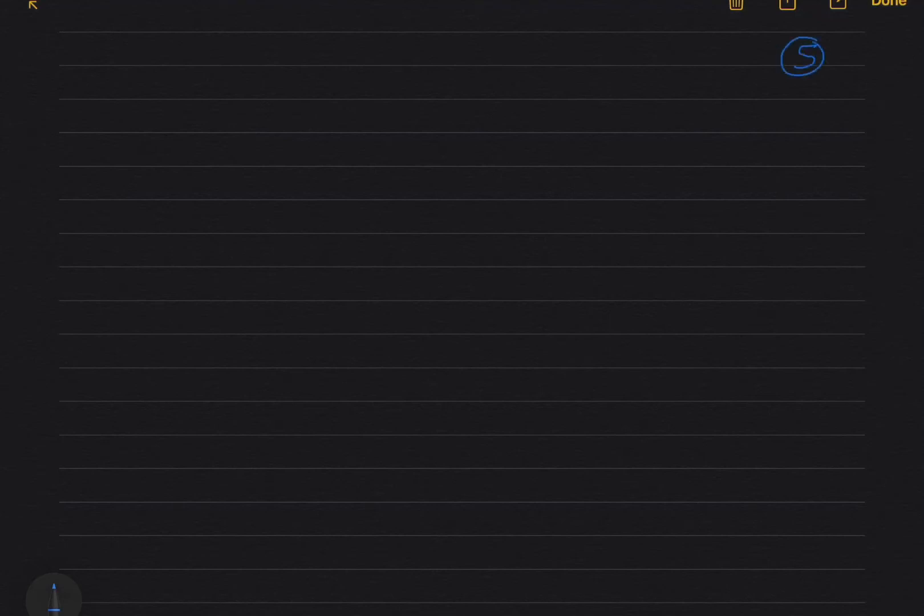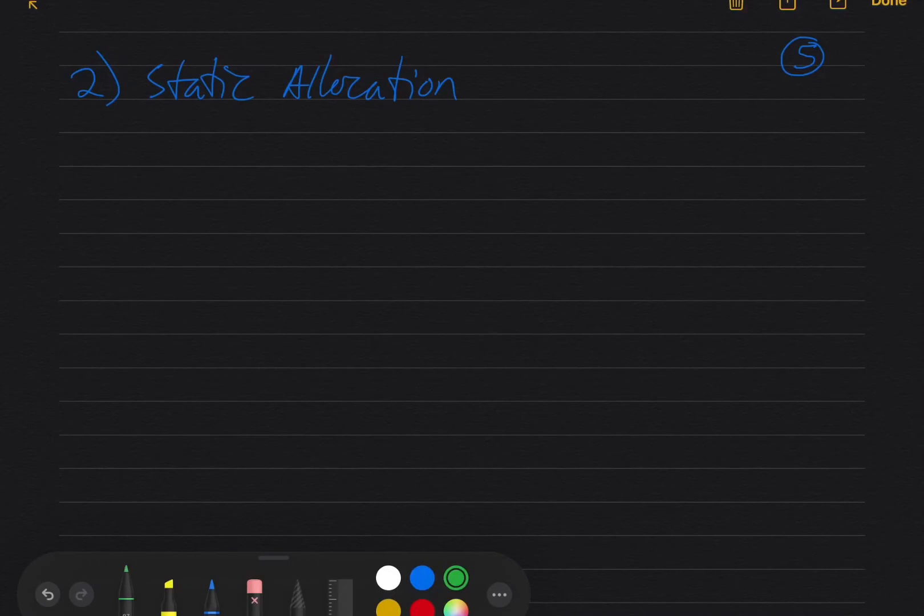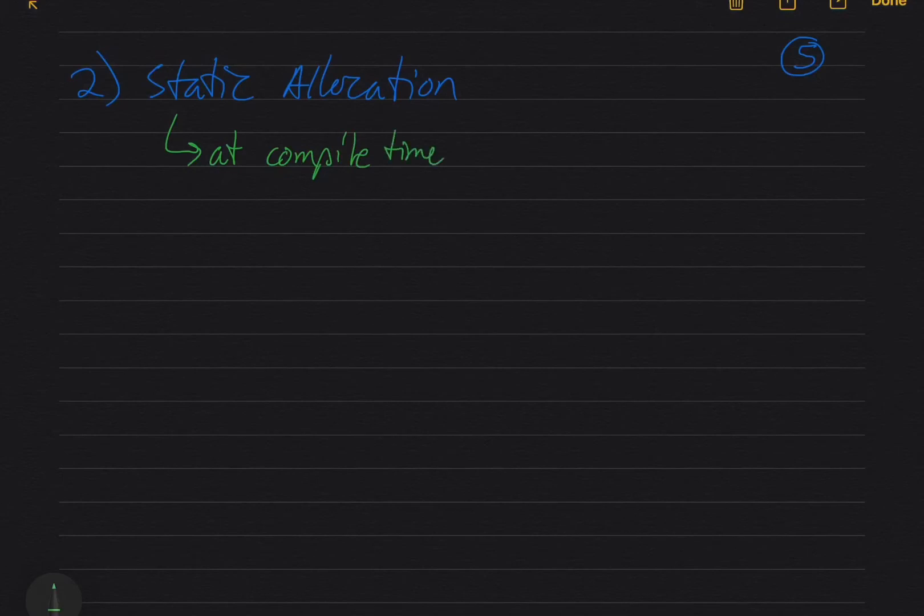This is page 5 of the memory allocation notes and we're on to section 2, which is static memory allocation. The name static implies that it is done at compile time when you're creating the system.